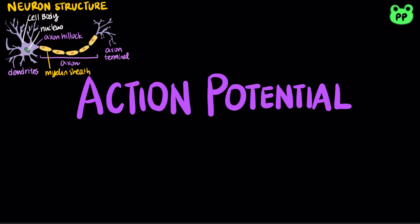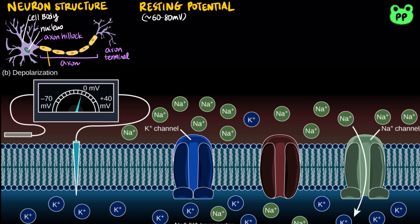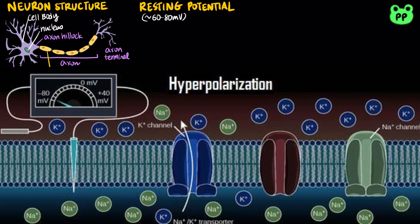Before talking about action potential, I'll first discuss basic concepts of resting potential and ion channels. Every cell has a voltage, or difference in electrical charge across its plasma membrane, called a membrane potential. Messages are transmitted as changes in membrane potential. The resting potential is the membrane potential of a neuron not sending signals, which is typically negative 60 to negative 80 millivolts. If the membrane potential becomes more positive, then it is said to be depolarized. If it becomes more negative, then it is said to be hyperpolarized.